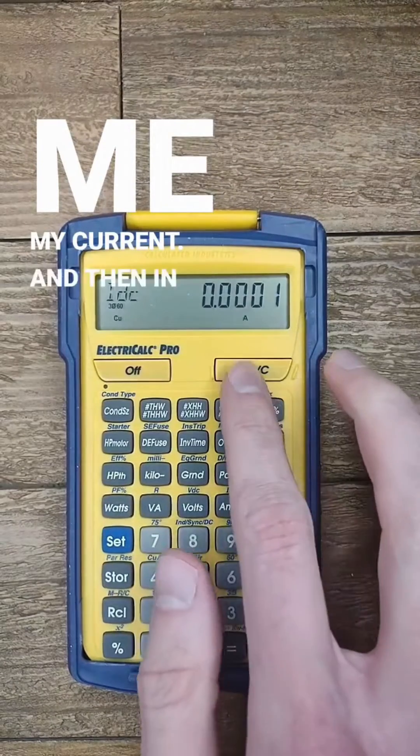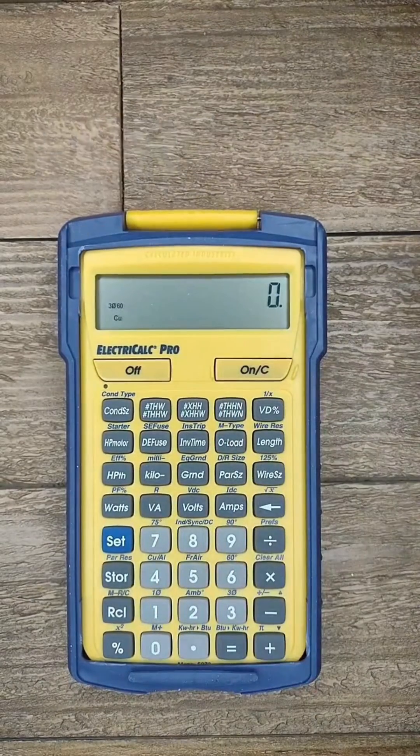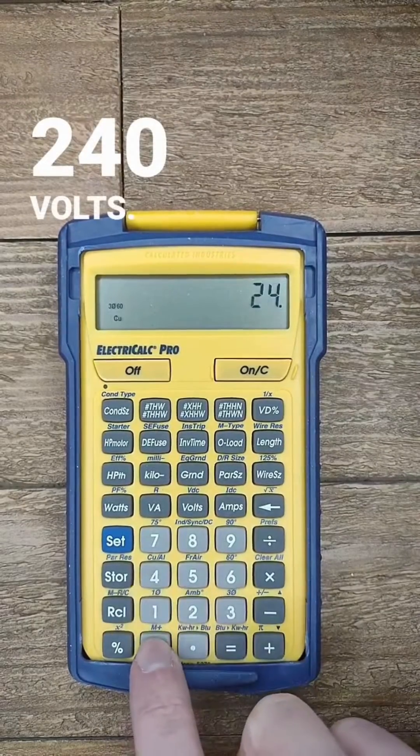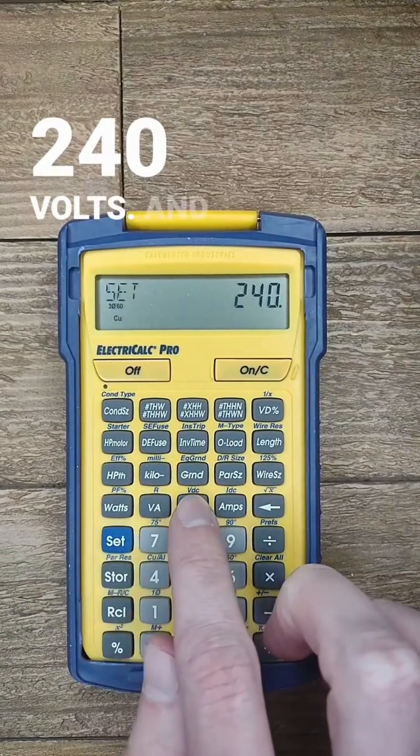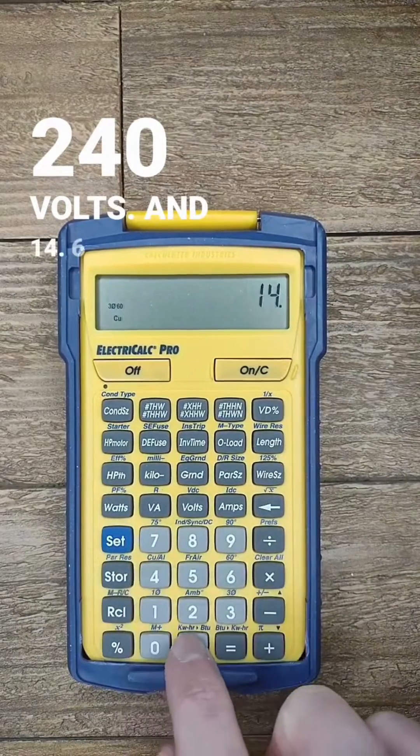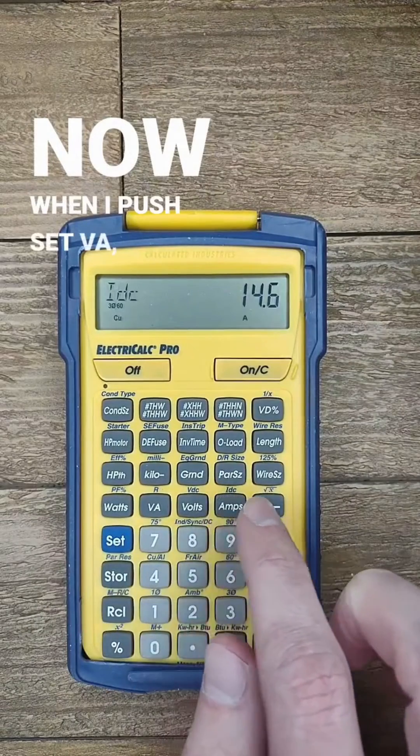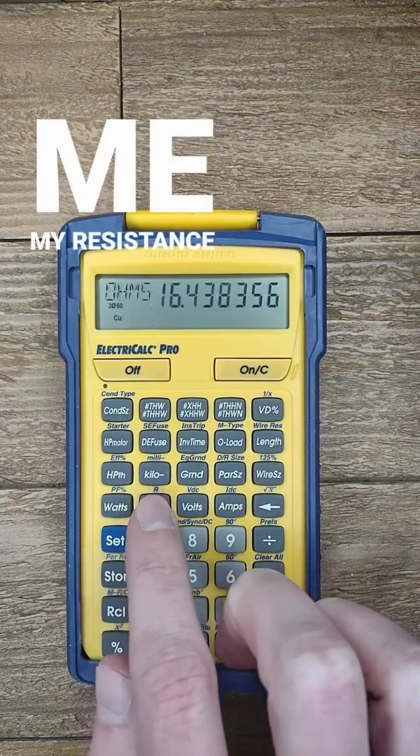And then in the last scenario, let's solve for resistance. So let's enter 240 volts and 14.6 amps. Now when I push set VA, it'll give me my resistance in ohms.